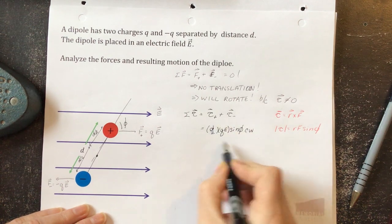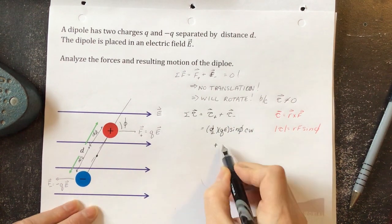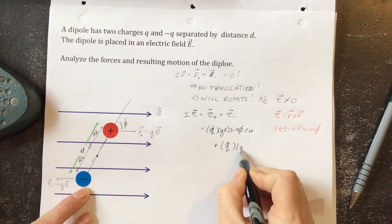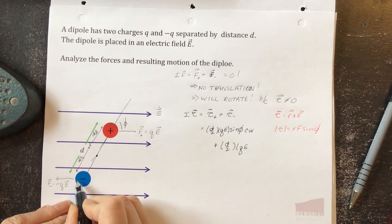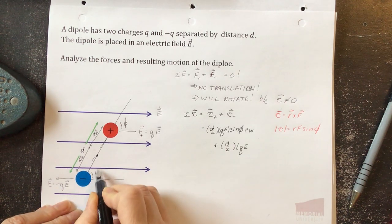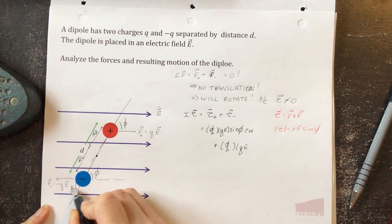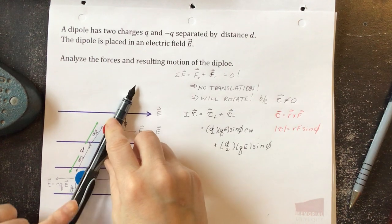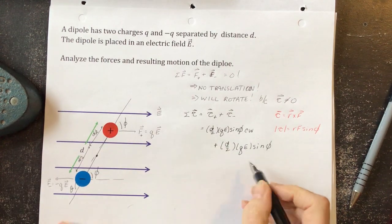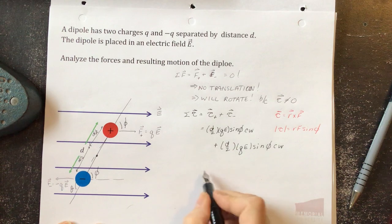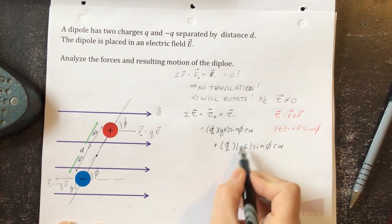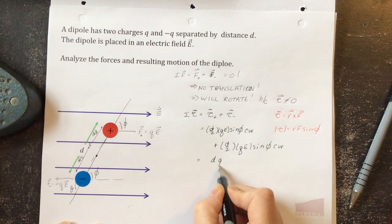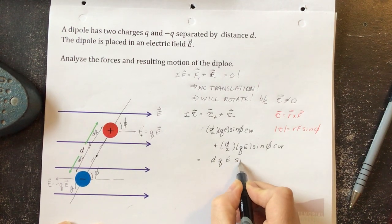Adding the torque on the negative charge: the distance is d over 2 again, times the magnitude of the force q times E, times sine of phi — and the rotation direction is again clockwise. So our net torque is d over 2 times qE sine phi plus d over 2 times qE sine phi, giving us d times q times E times sine phi.